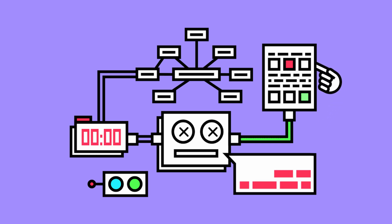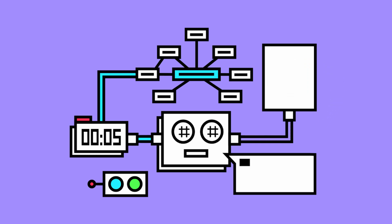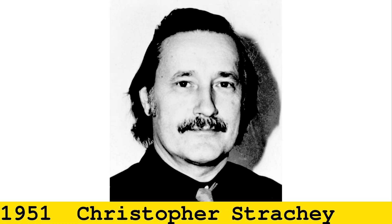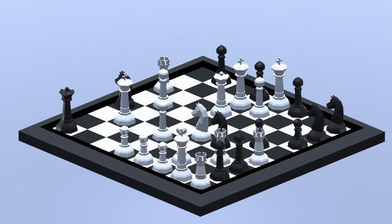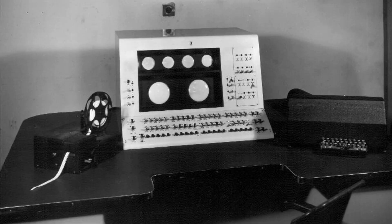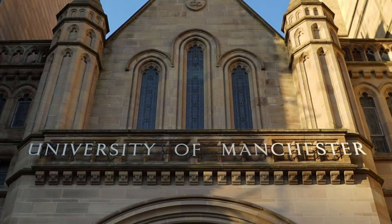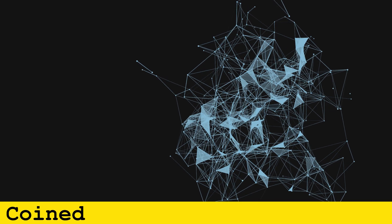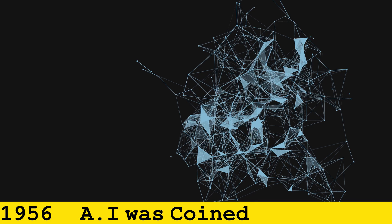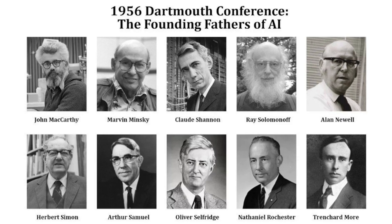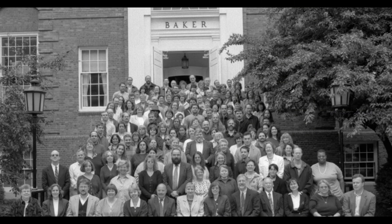The Turing test was the first serious proposal in the philosophy of artificial intelligence. In 1951, Christopher Strachey, a computer programmer, wrote a checkers program — also known as Game AI — using the Ferranti Mark 1 machine of the University of Manchester, which would compete with humans in playing chess. In 1956, the most important year in AI innovation, the term artificial intelligence was coined by John McCarthy at the Dartmouth conference.